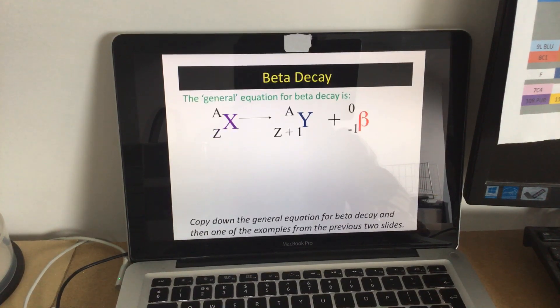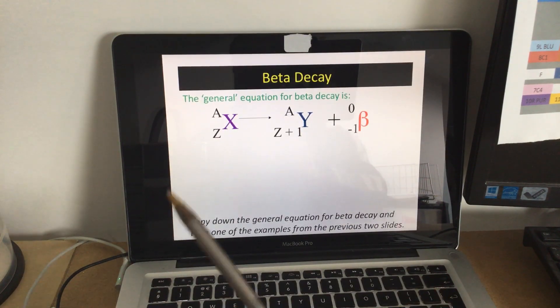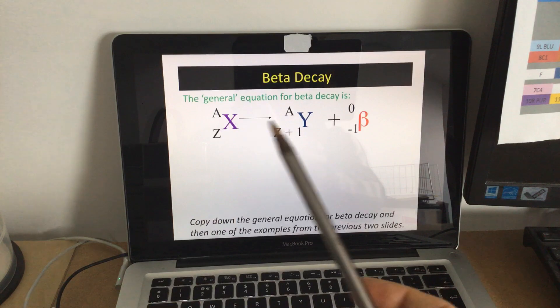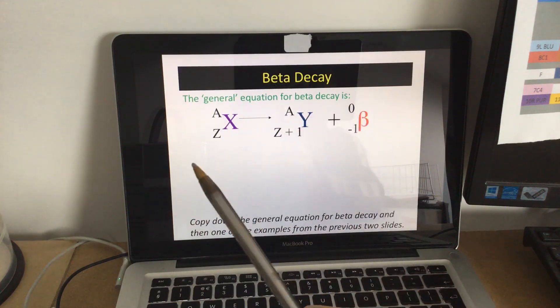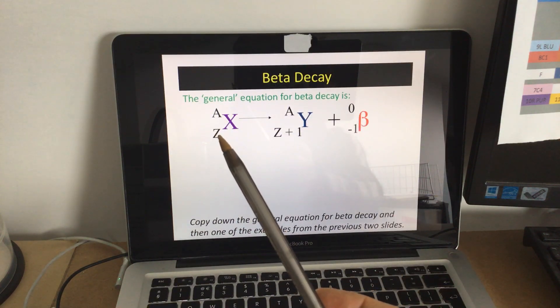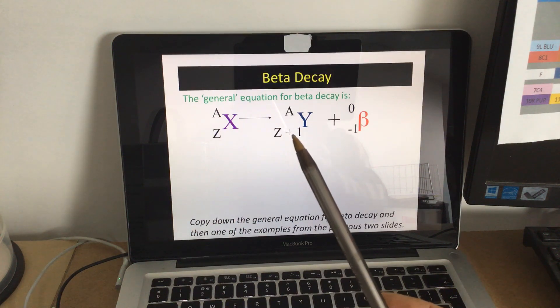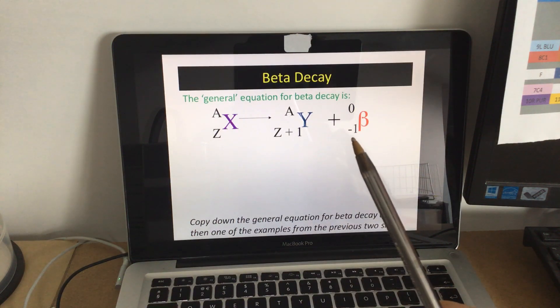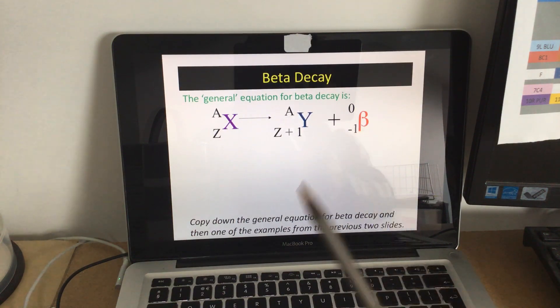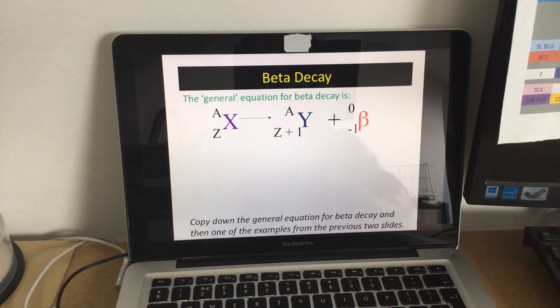There's another example. So it looks like that. So the top number, the big number, the mass number, stays the same, and the bottom number, the Z as they've called it here, is Z plus one, one more proton, and the electron has a charge of minus one. Alpha, beta.